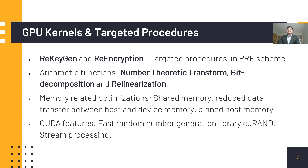We also used CUDA intrinsic functions to reduce latency further. The CUDA random number library gave us nearly five times improvement in performance. We also used the stream feature of CUDA to launch all kernels in parallel, which allows them to pipeline processes and thereby save execution time.